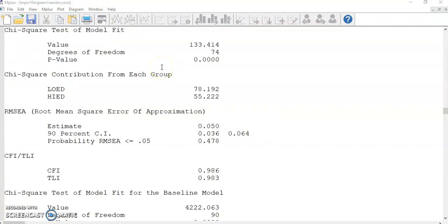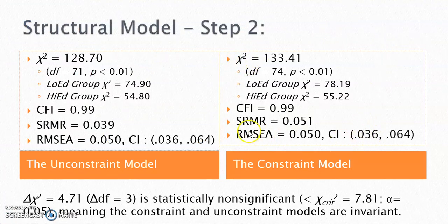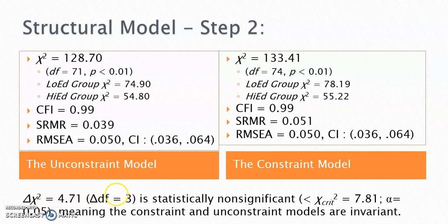And we have the constrained structural model. The fit indices are good. The model chi-square of the constrained model is 133.41, which is about 4.71 higher than the unconstrained model. This difference is not statistically significant given a degrees of freedom of 3. Since the two models are not different, there's no need to do step 3.